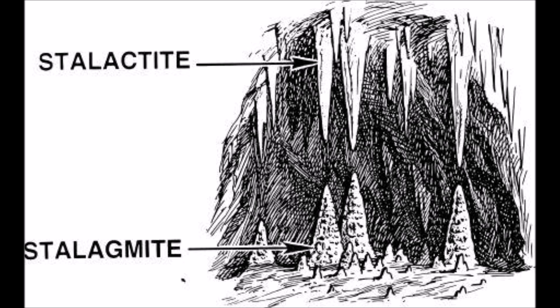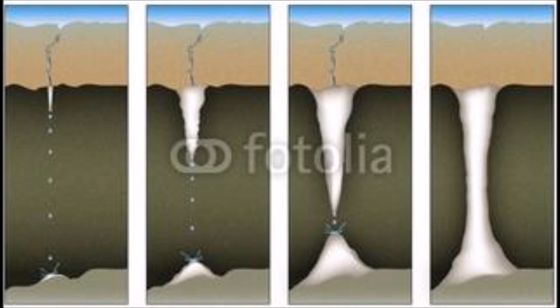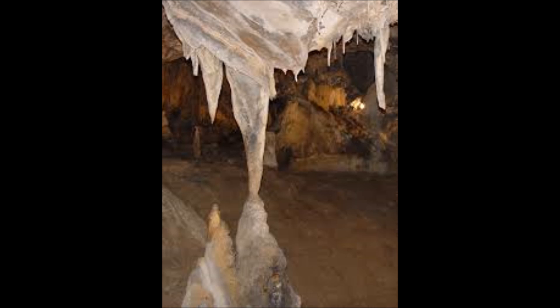Stalactites and stalagmites often occur in pairs and meet, forming columns that may grow as large as 1.5 meters, or 5 feet, in diameter.